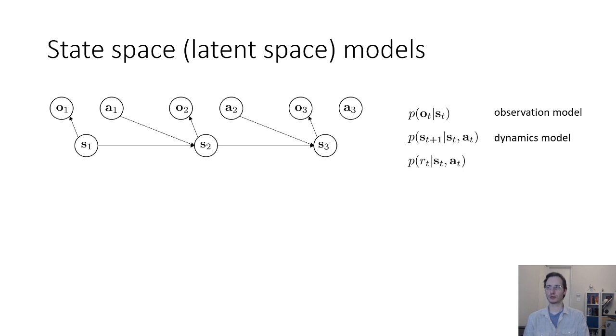We will typically also need to learn a reward model, P of rt given st at, because our reward depends on the state. And since we don't know what the state is, we don't know how the reward depends on it. So, we typically also add a reward node to this and learn a reward model.